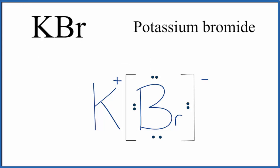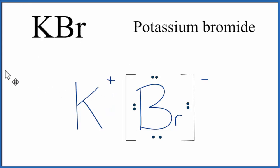You'll often see brackets around the positive ion as well. And that makes this the Lewis structure for KBr, potassium bromide.